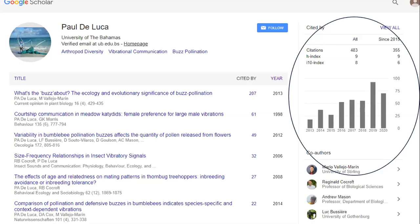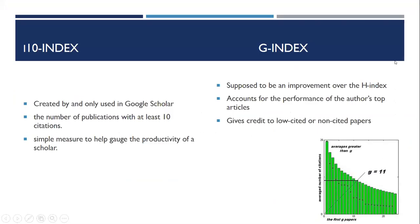There's also the G index, unique to Google Scholar, which is supposed to be an improvement over the H index. It accounts for the performance of an author's top articles, using a G-squared calculation to find the index value.